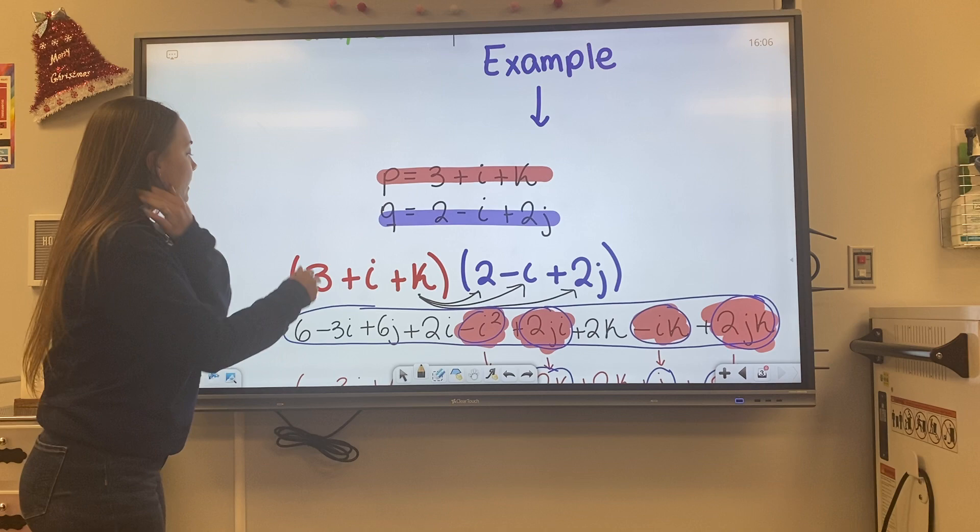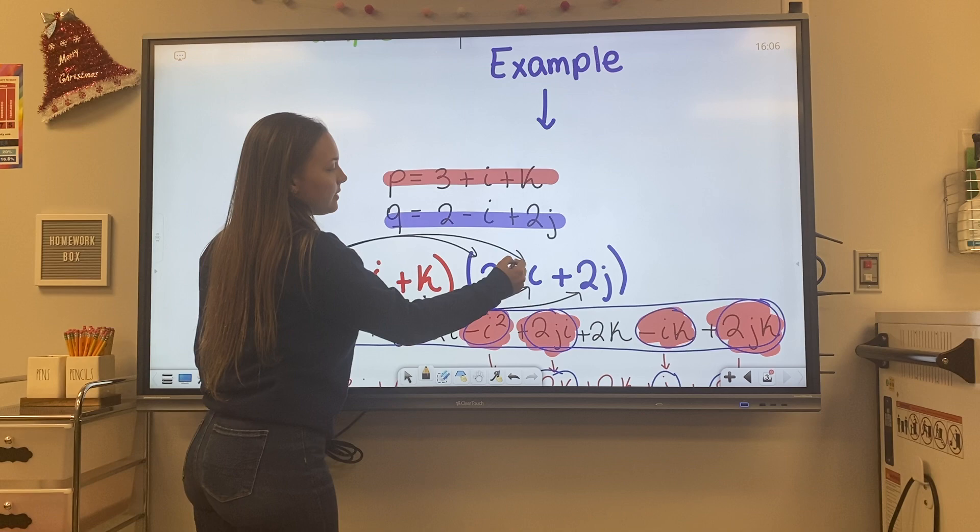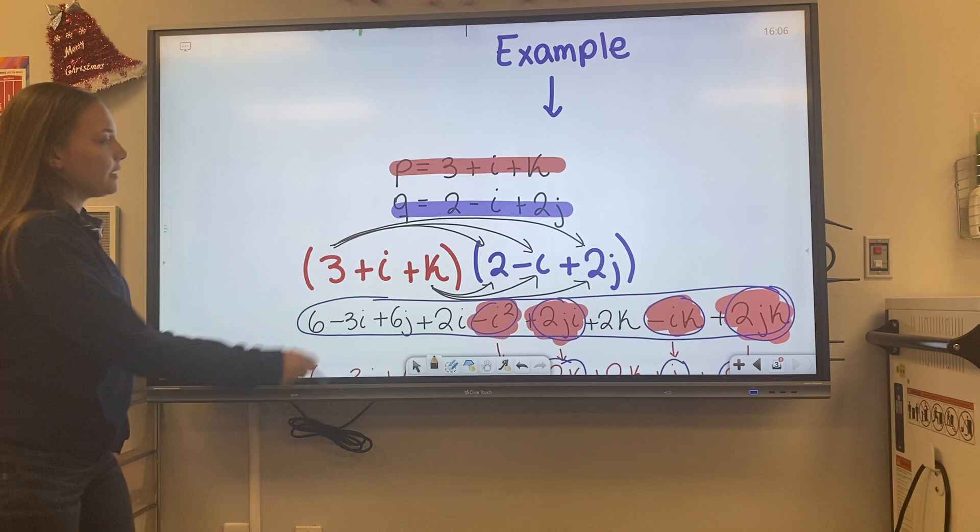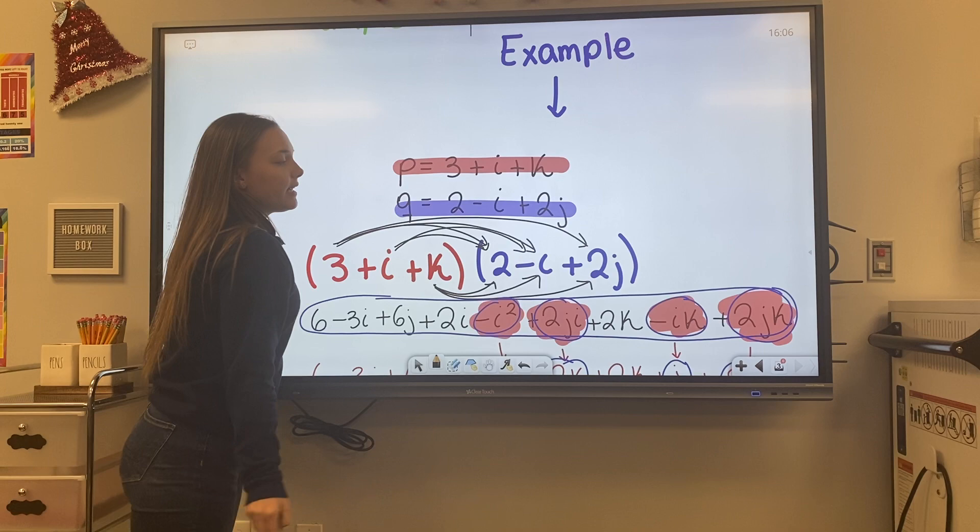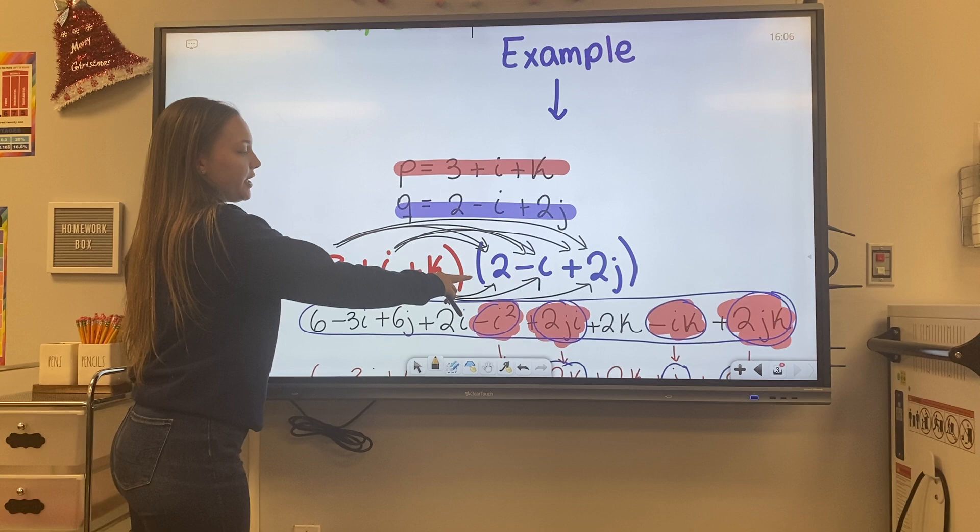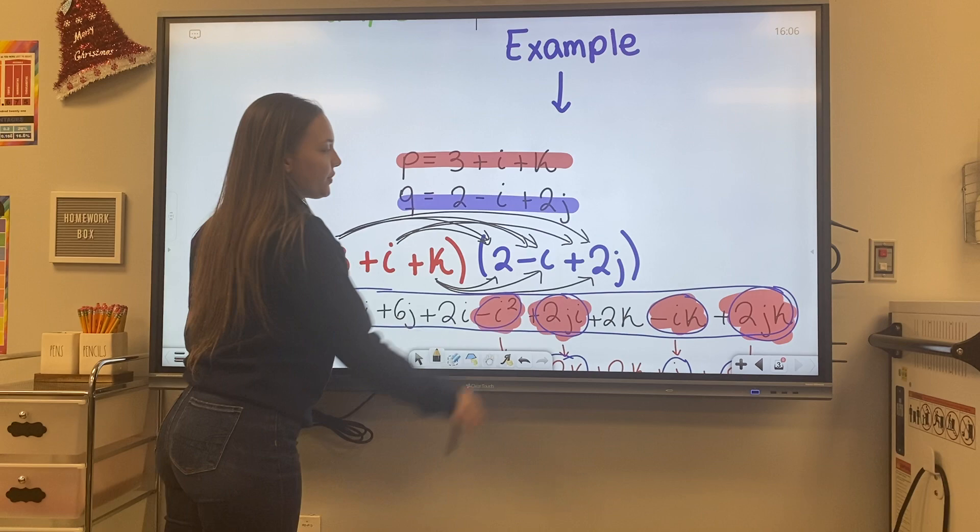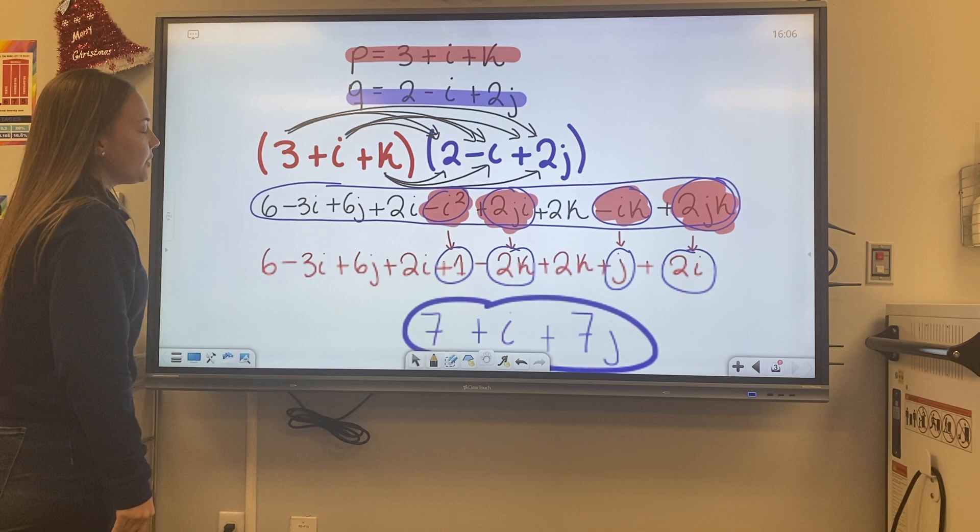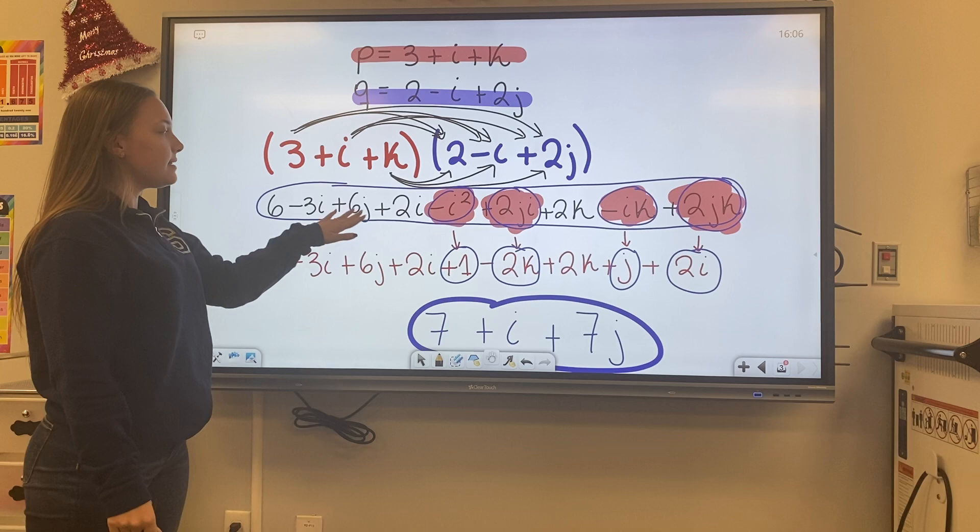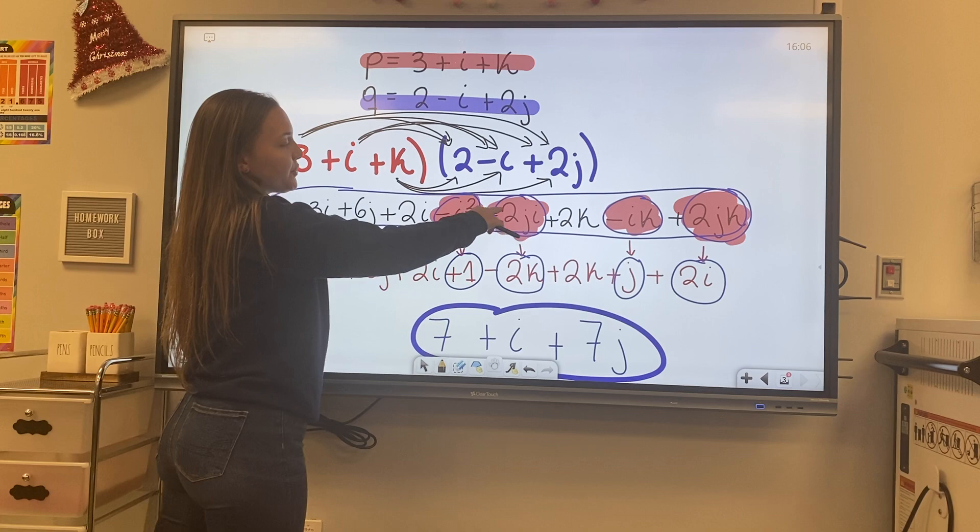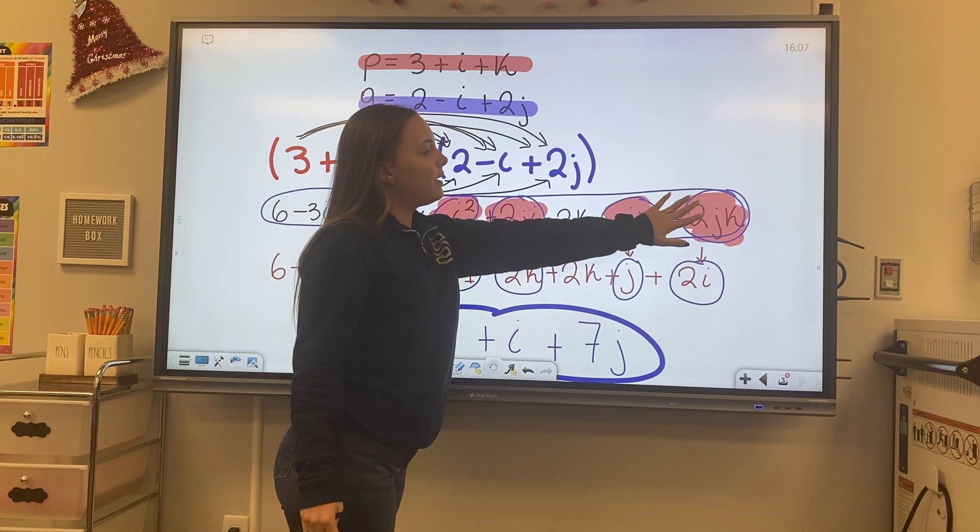So you can see here how we have the same two Quaternions that we were working with before. We have 3 plus i plus k and 2 minus i plus 2j. So we're going to multiply using the foil method. As you can see, I already have done it previously. But it's simply 3 times 2, 3 times negative i, 3 times 2j and then i times 2, i times negative i and i times 2j and then as you can see here the k, k times 2, k times negative i and k times 2j and when you look here you can see how we have 6 minus 3i plus 6j plus 2i minus i squared plus 2ji plus 2k minus ik plus 2jk.